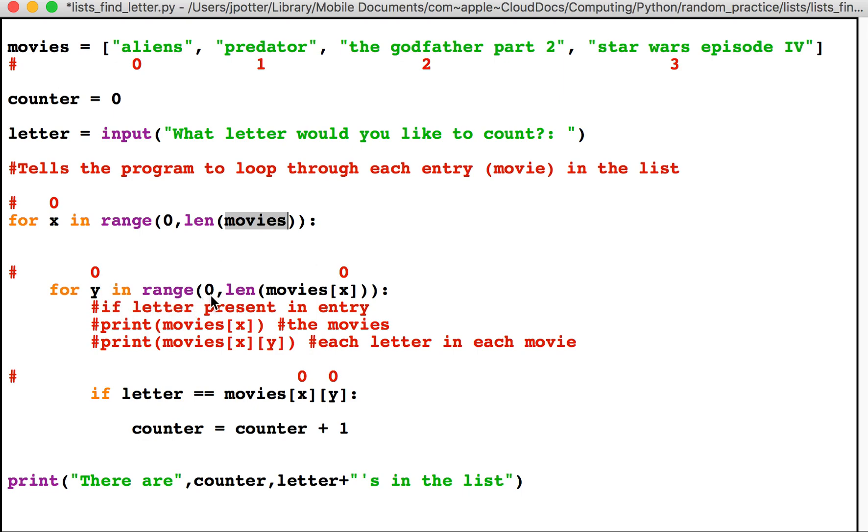So what this does here is: we start at zero, position zero, and it picks out the first movie in the list. Okay, so x starts at zero, the counter starts at zero, and that will increase every time the loop goes by one.